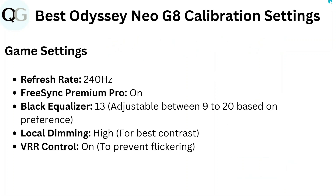Game Settings: Refresh Rate 240Hz, FreeSync Premium Pro On, Black Equalizer 13 (adjustable between 9–20 based on preference), Local Dimming High for best contrast, VRR Control On to prevent flickering.